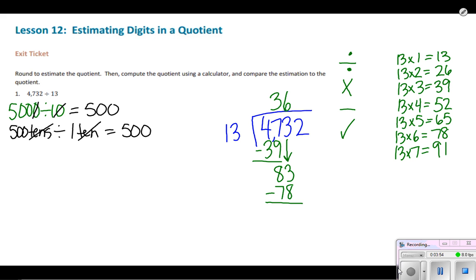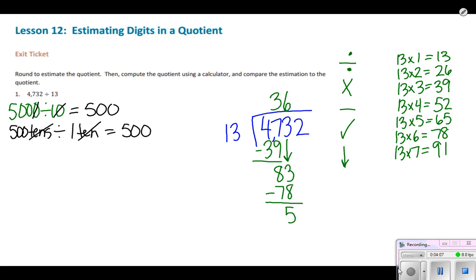When we subtract, 83 minus 78 is 5. So this is our check step. 5 is smaller than 13. So we can bring down the next number. And it looks like I forgot to put that symbol up there.